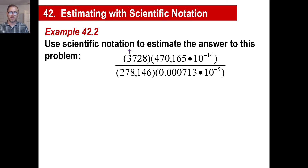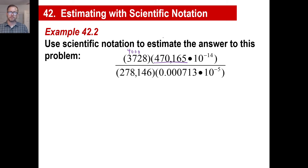So this will be 4,000 for this — that's the closest. You don't want 3,700; you don't want to have to multiply 3,700 times, so just go to 4,000. This number needs to be close to another number with just one integer and everything else zeros — 500,000. This one: 300,000. And this one: 7.